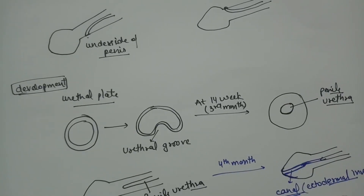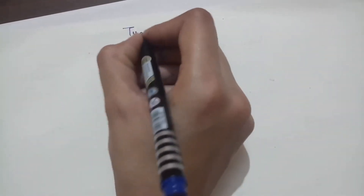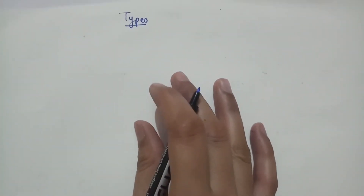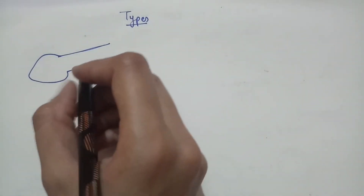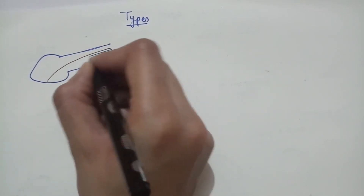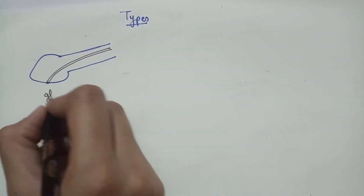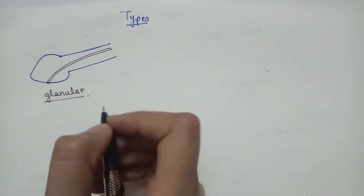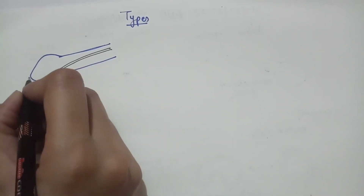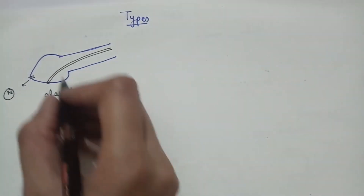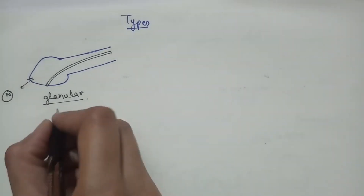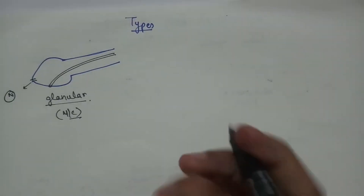Any abnormality in the fusion of this canal and the penile urethra can result in hypospadias. Looking at the types of hypospadias: the first type is when the urethra opens into the glans penis — this is called the glandular type and it is the most common type.